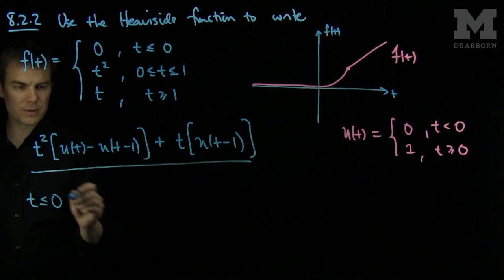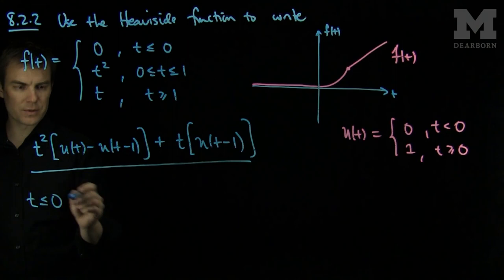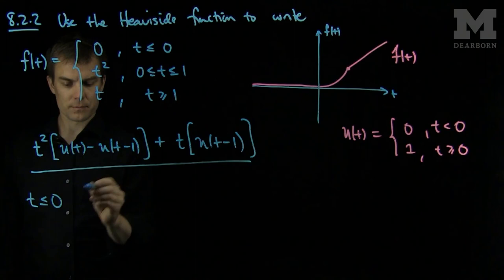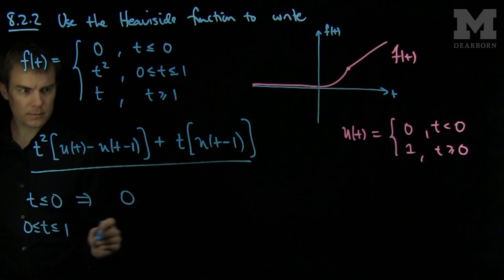So if t is less than or equal to 0, this term is 0, this term is 0, and this term is 0, so we have 0. If t is between 0 and 1, then this term is 0, and this term is 0, and this term is 1, so we will have a t squared.